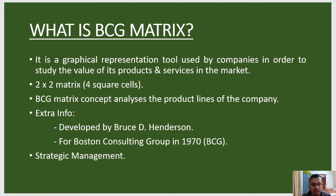BCG matrix is a two-by-two matrix in which there are four square-shaped cells, or four quadrants. There are four things inside that matrix — we'll see those in later slides, but for now we understand it is a two-by-two matrix with four cells inside.